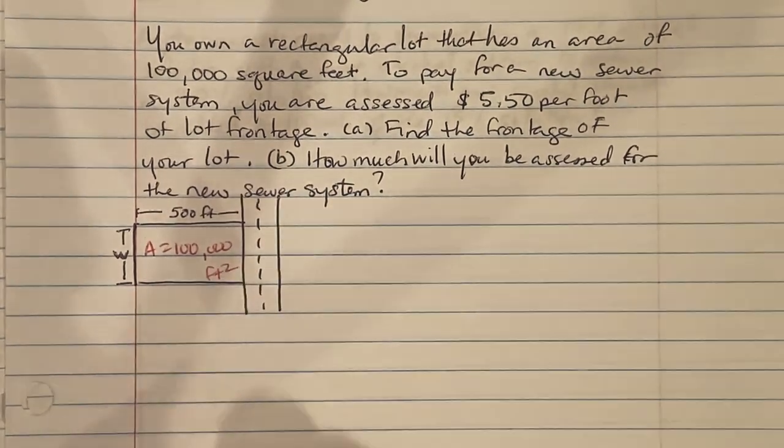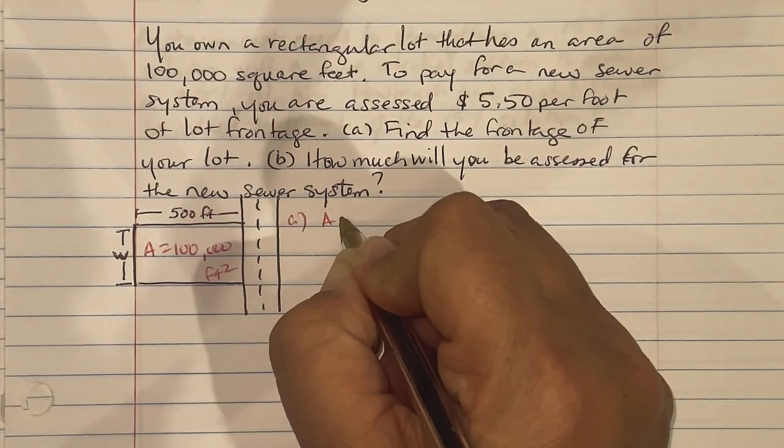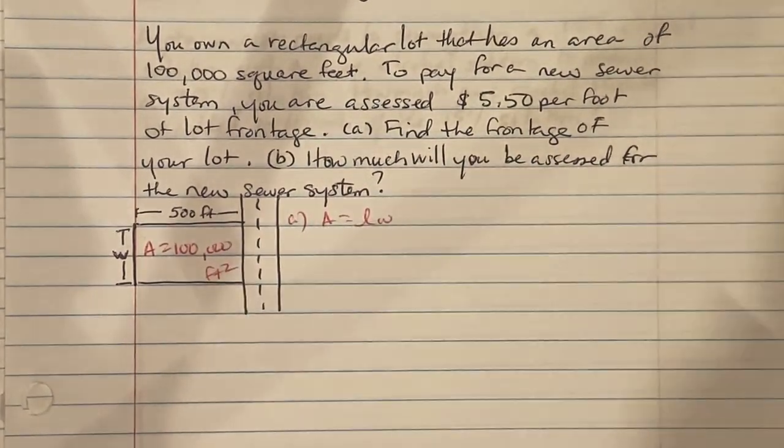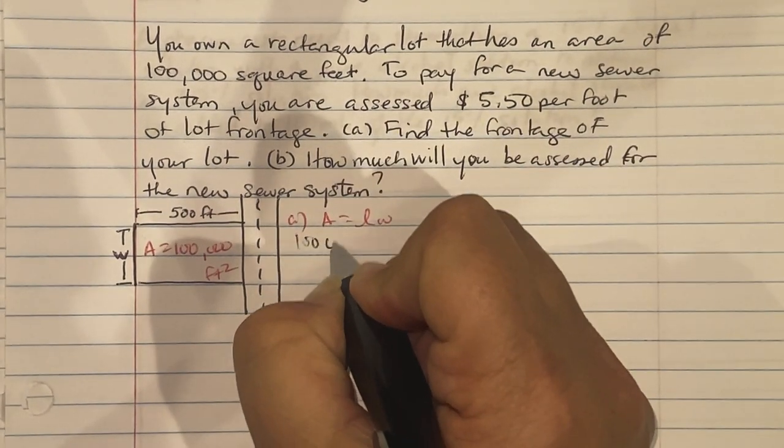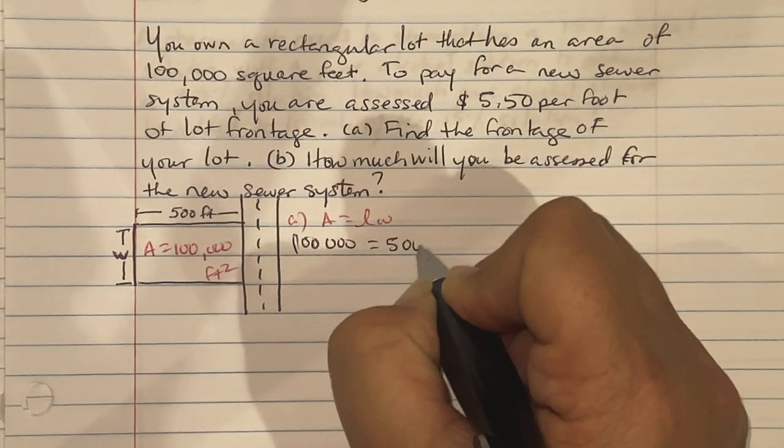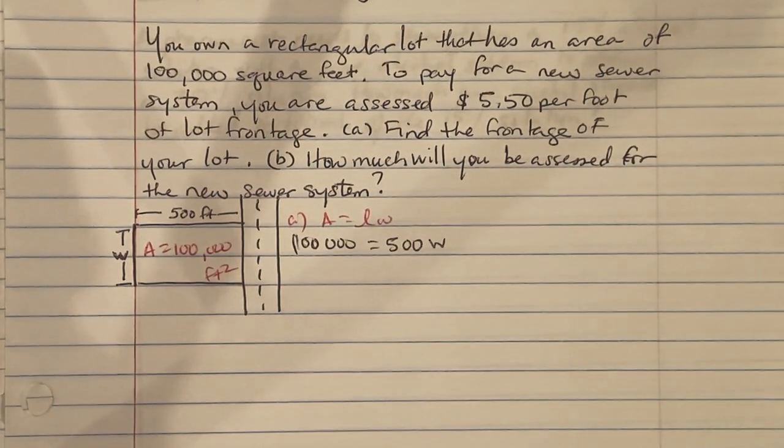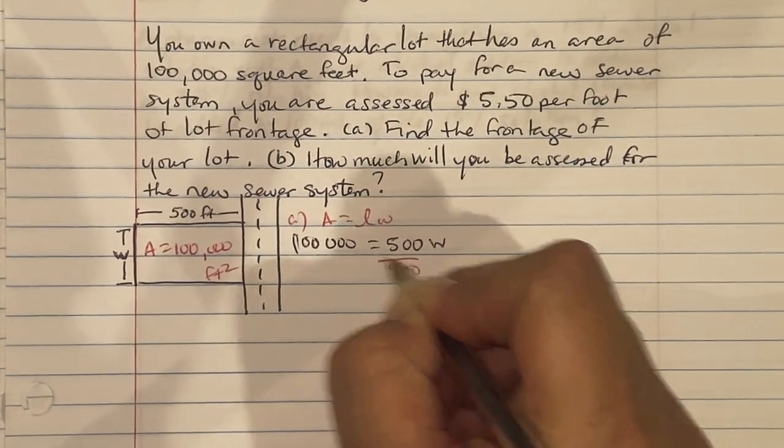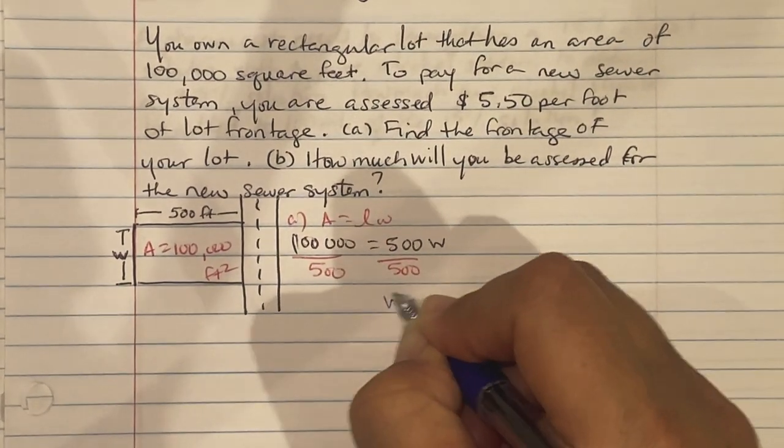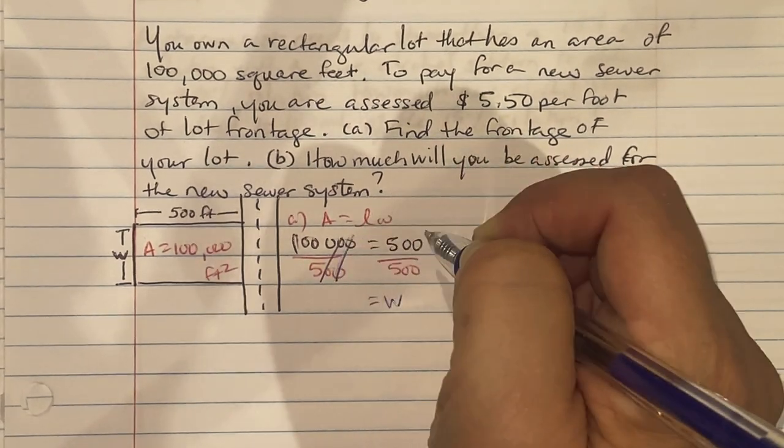So remember, the formula for area is equal to length times width because they gave you an area. So we're going to say 100,000 equals 500 times W because they told you the length is 500. We're going to divide both sides by 500. So W equals, cancel a pair of zeros, a thousand divided by five is 200 feet.